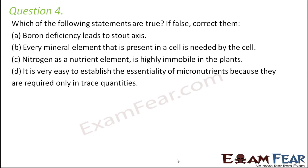Let us look at the last question: Which of the following statements are true? If false, correct them. First: boron deficiency leads to stout axis — this is absolutely true, because boron helps in the growth of the axis. Second: every mineral element that is present in a cell is needed by the cell — this is false, because if an element is present in a cell, that does not mean the cell is using it; the cell will absorb whatever it gets but will use only what it needs. Third: nitrogen as a nutrient element is highly immobile in plants — this is false, because nitrogen is highly mobile; it moves from older parts towards the mature parts, and that is why nitrogen deficiency symptoms are first seen in the older parts.